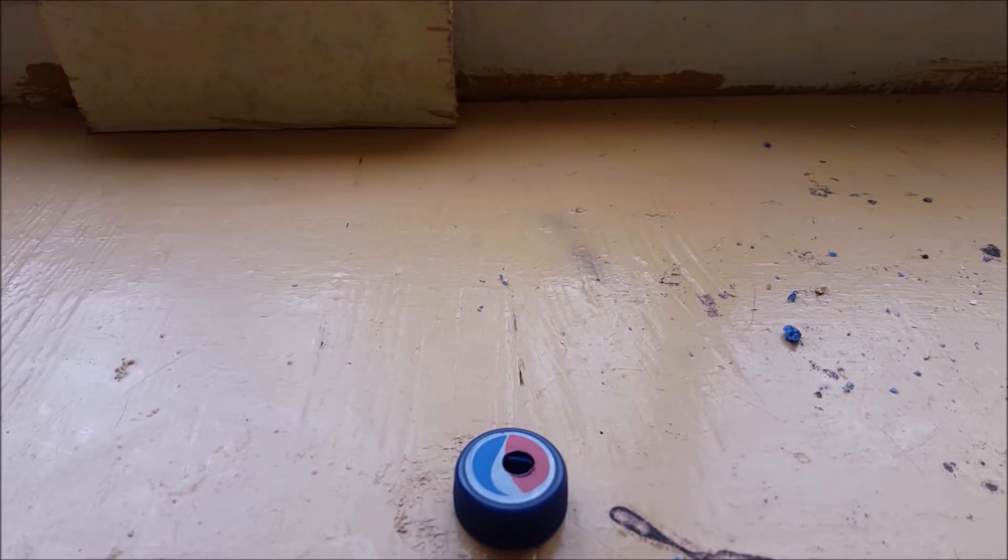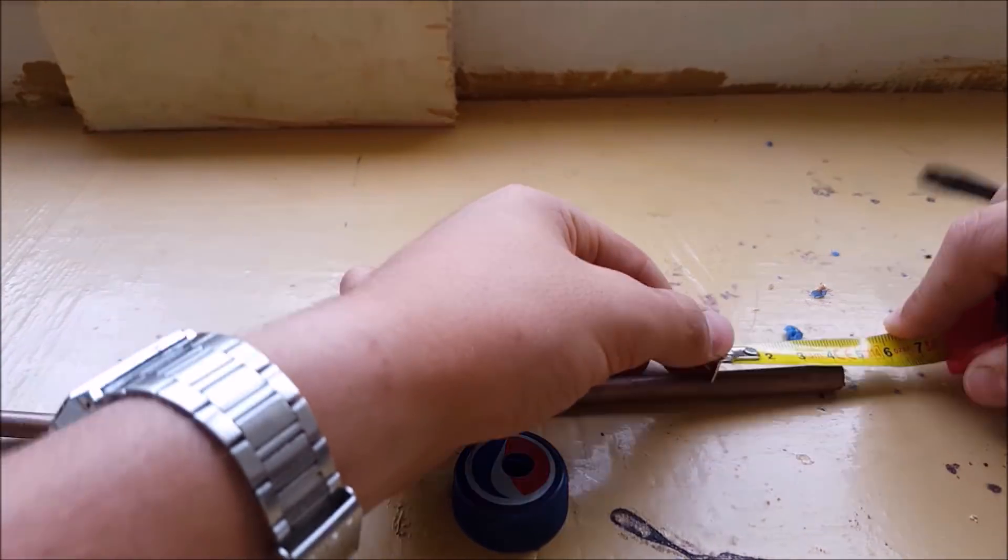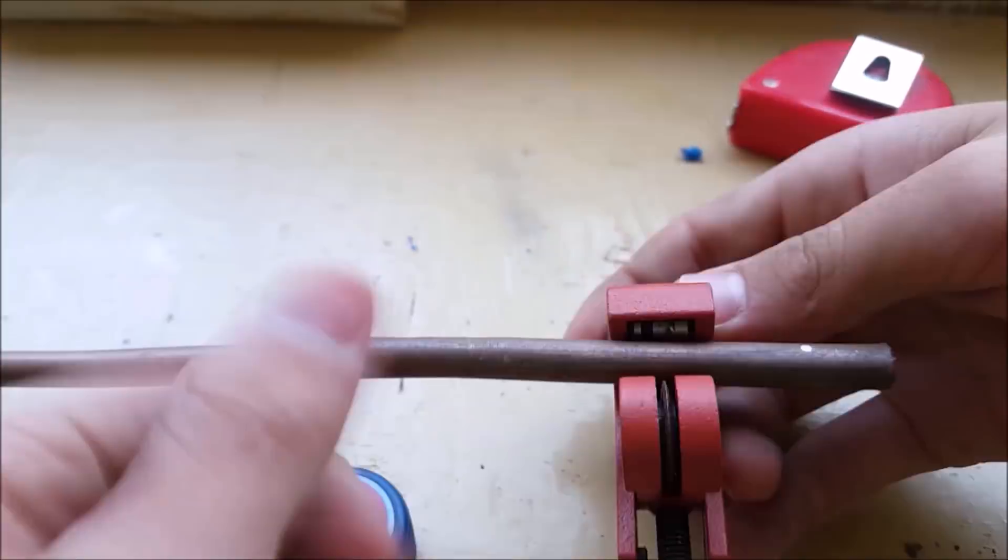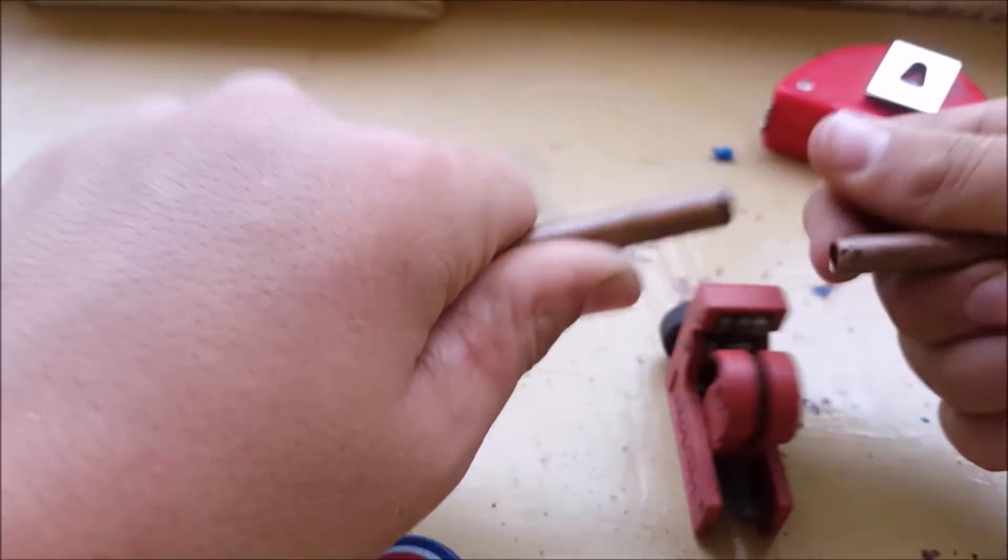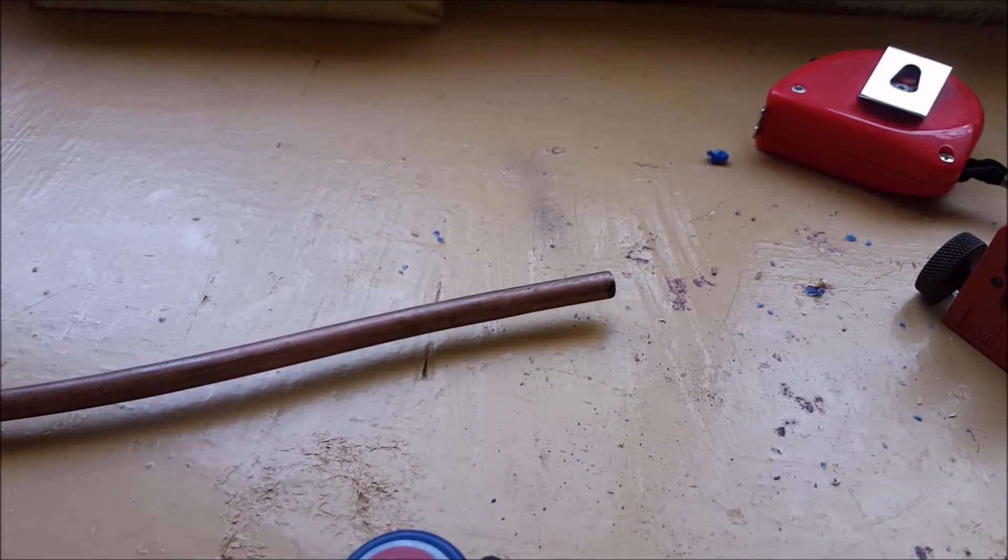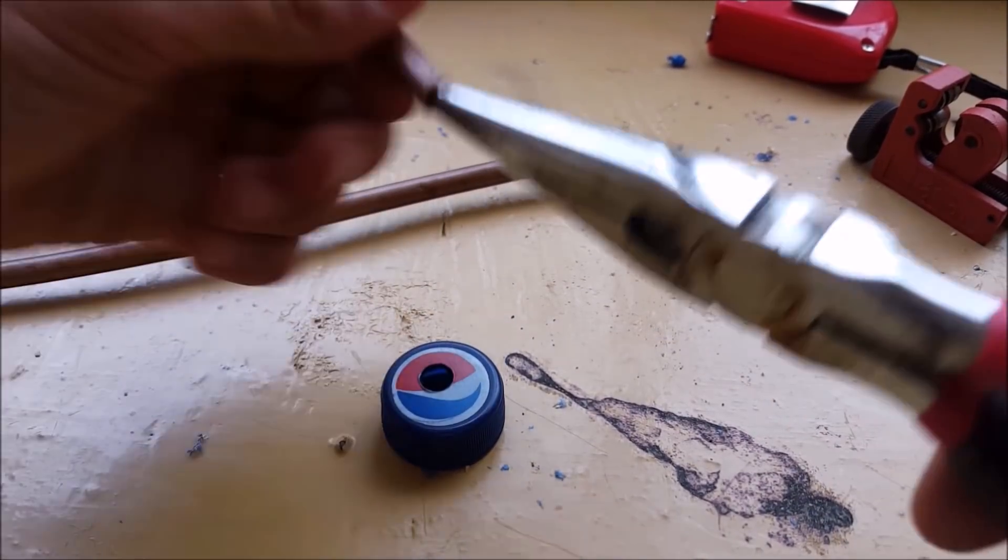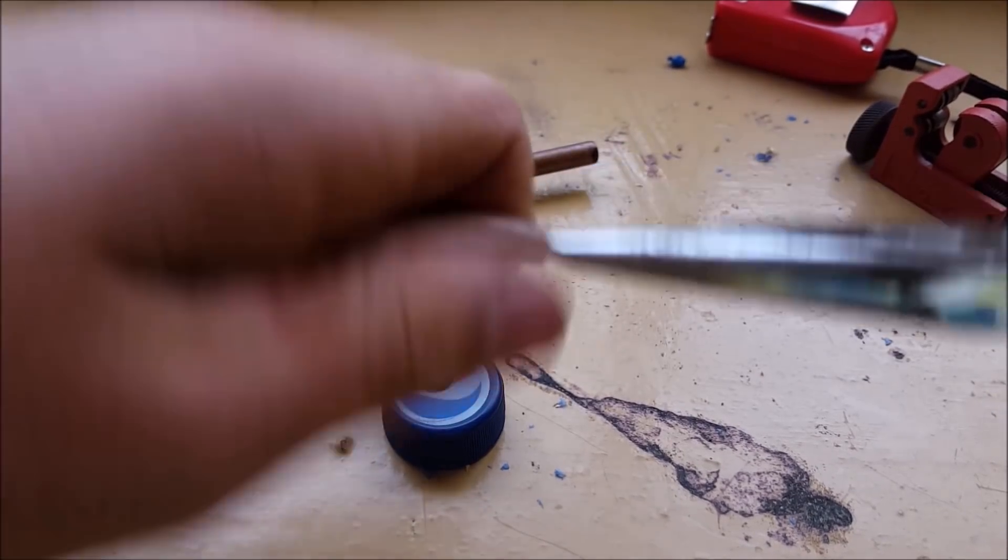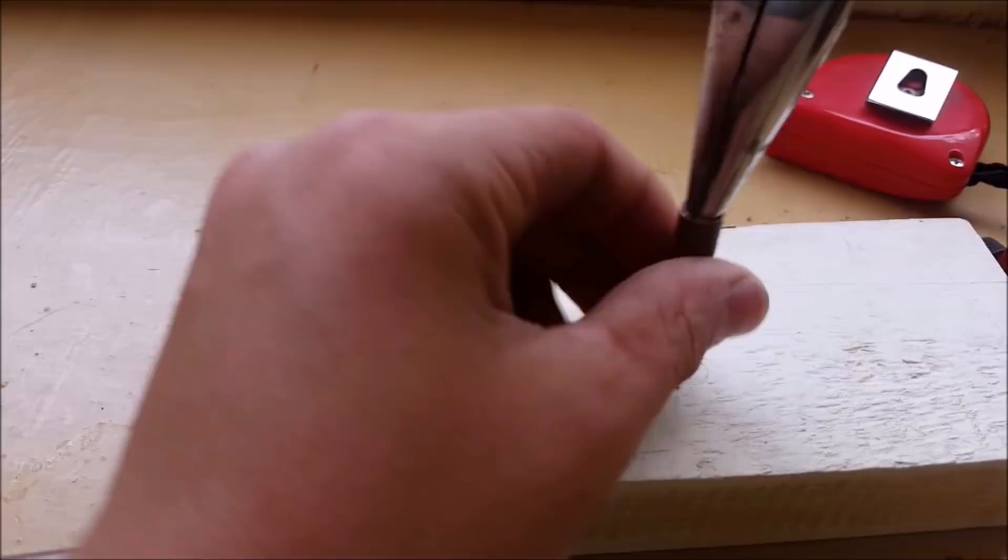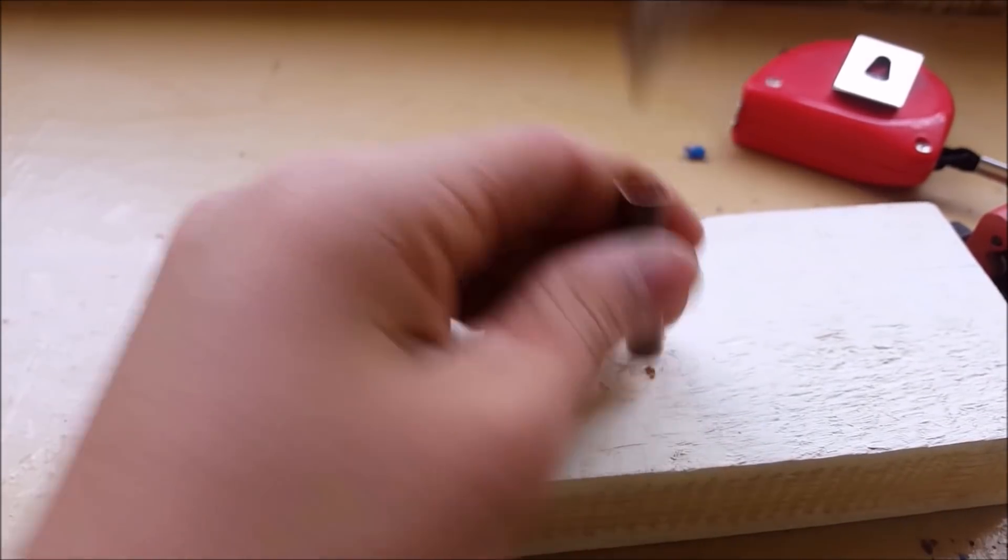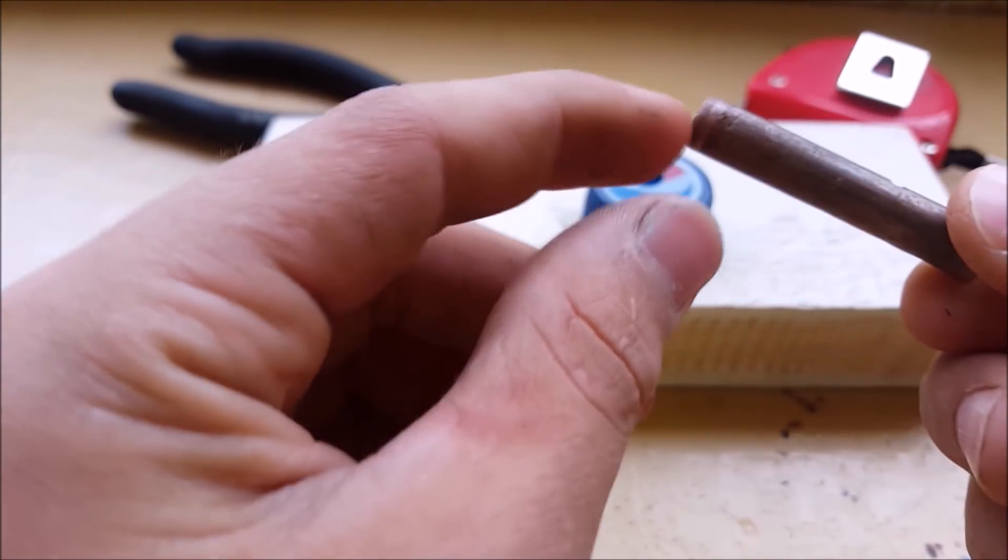After you drill the hole, what you are going to need is to cut 4 centimeters of the 10 millimeter copper tubing. After you have cut it, grab some needle nose pliers and open it up from one side of the copper tubing. Do like what I am doing now. This is done so that when we insert it into the cap, it makes a really tight seal.